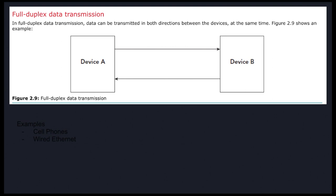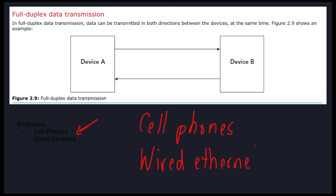Full-duplex data transmission means data can be transmitted in both directions at the same time. Examples include cell phones — you can interrupt each other and have a natural conversation, unlike a walkie-talkie — and wired Ethernet. When you connect to the internet using an Ethernet cord directly to the modem, this uses full-duplex, which is one reason why a wired Ethernet connection is faster and more reliable than Wi-Fi.